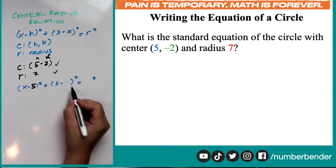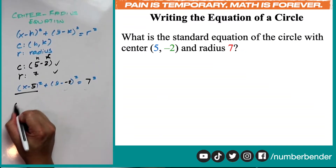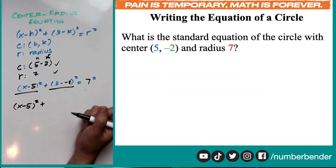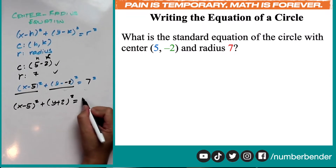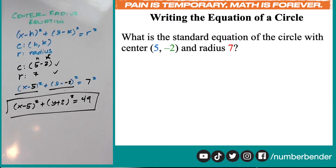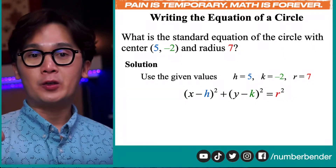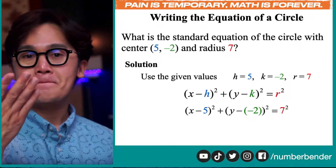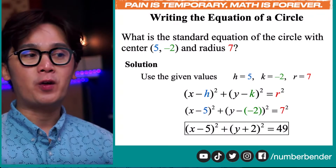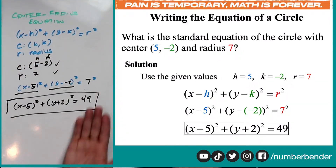h is 5, k is negative 2, and r is 7. By simplifying our equation, we don't need to simplify further because x minus 5 squared is already in simplest form. For the k term, negative minus negative 2 becomes positive, so we have y plus 2 quantity squared. And 7 squared is 49. So the standard equation of our circle is x minus 5 squared plus y plus 2 squared equals 49.